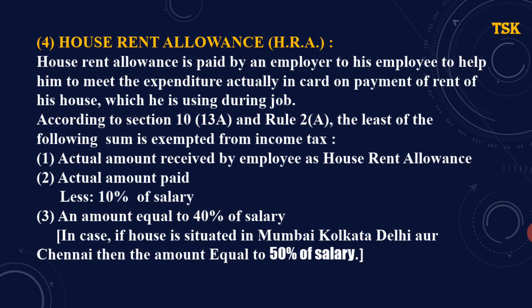Now according to Section 10(13A) and Rule 2A, the least of the following sums is exempted from income tax. It is a partly taxable allowance. हमें तीन numbers दिये गए हैं — उनमें से जिसका भी sum सबसे कम होगा, उसे हमें exempt करना है। पहला: actual amount received by employee as HRA. दूसरा: difference between actual rent paid and 10% of salary, यानी actual amount paid minus 10% of salary। तीसरा: amount equal to 40% of salary।